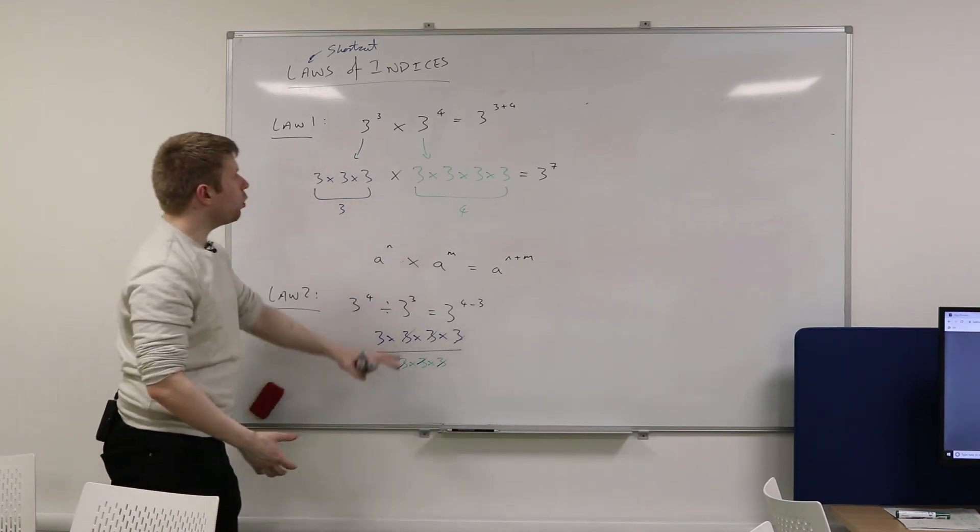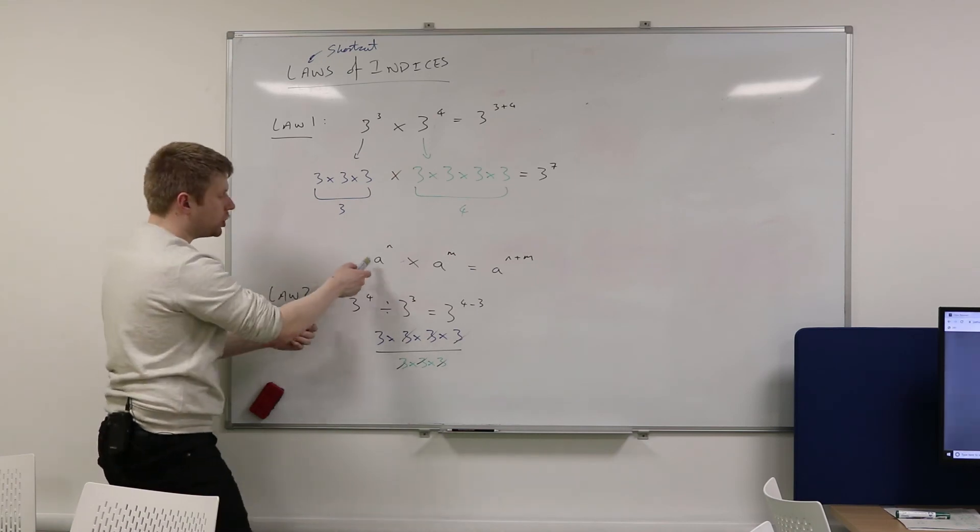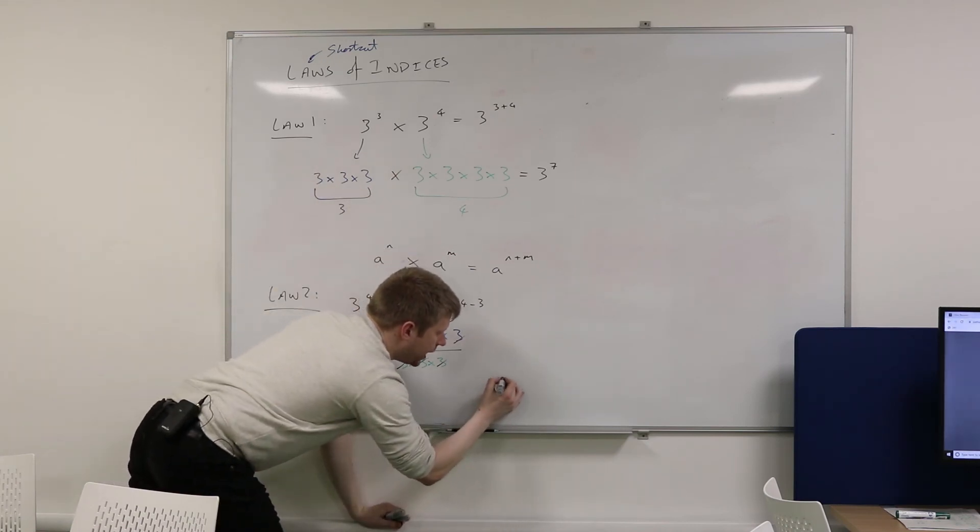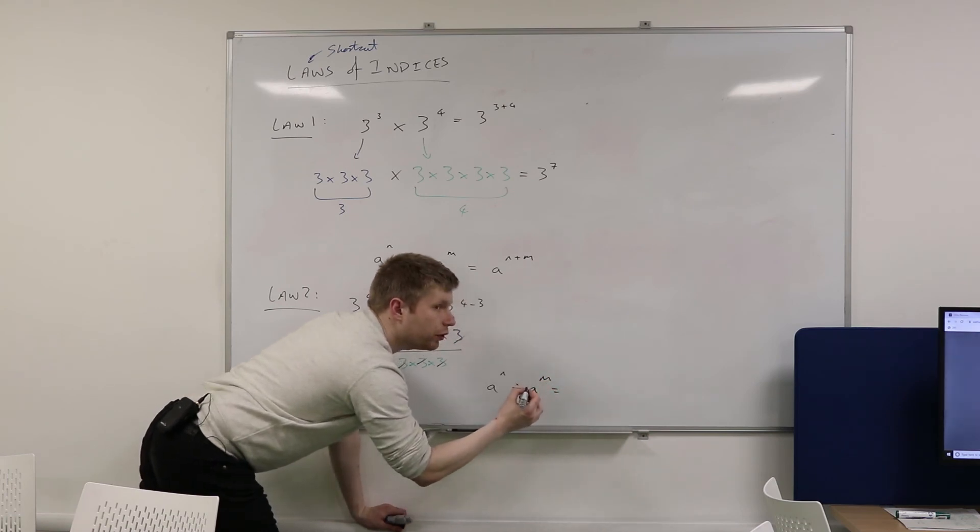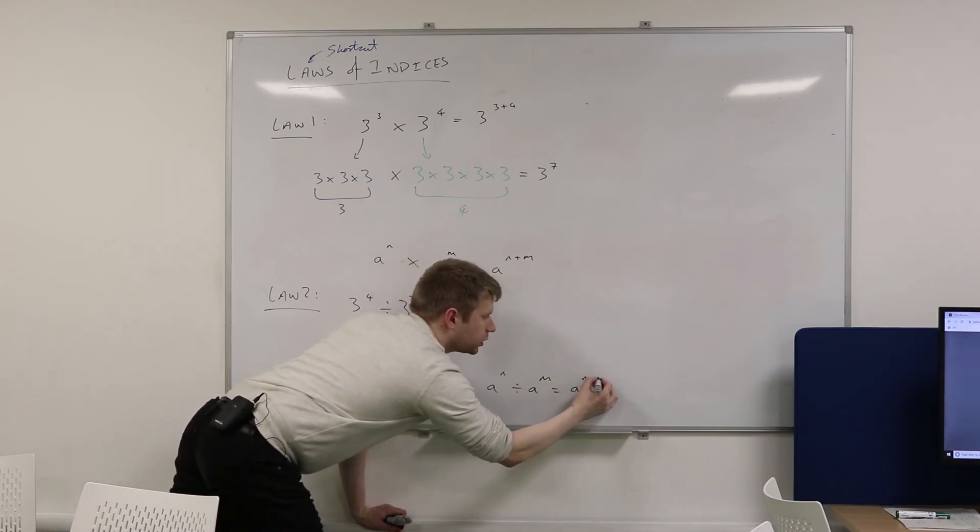So what I'm trying to show you here, I'm not just going to jump straight to the law. Actually, I should generalise this. So if I take a to the power of n, and I divide it by a to the power of m, what should that be equal to? A, n minus m. That's a good answer.